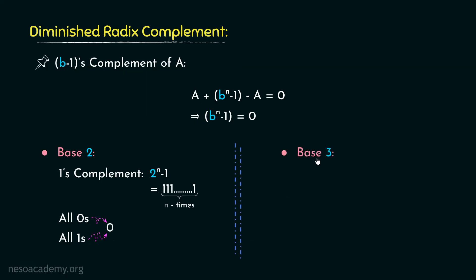Consider the base 3 number system. Here the diminished radix complement is two's complement, which according to this equation would be 3 raised to the power N-1, which is N number of twos. So in case of base 3, all zeros and all twos both specify the same symbol zero. So, apparently, for every number system, all zeros and the pattern with all the symbols with the highest magnitude will specify zero.